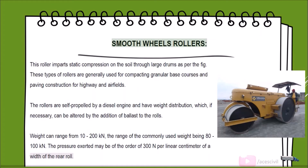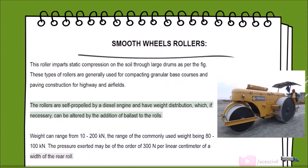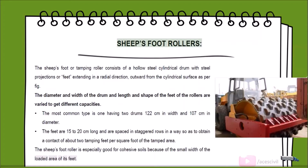Smooth wheel rollers impart static compression on the soil through large drums. They are generally used for compacting granular base courses and paving construction for highways and airfields. The rollers are self-propelled by a diesel engine and have weight distribution that can be altered by adding ballast. Weight can range from 10 to 200 kN, with pressure of the order of 300 N per linear centimeter.